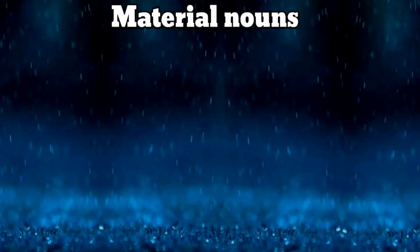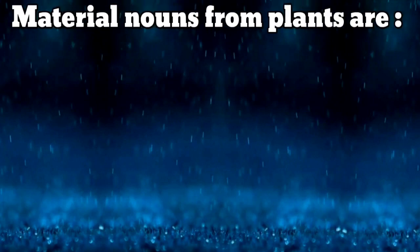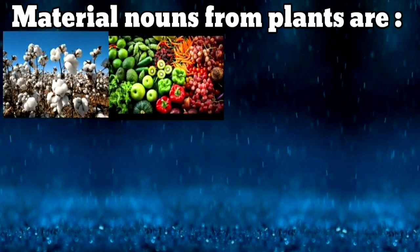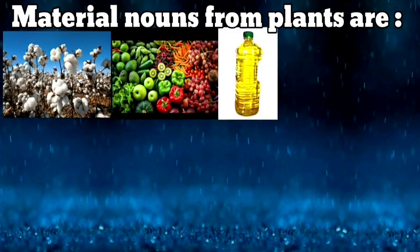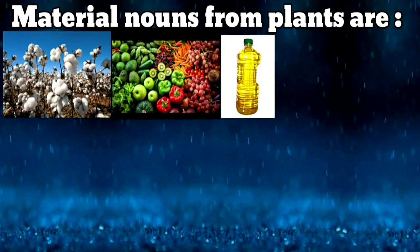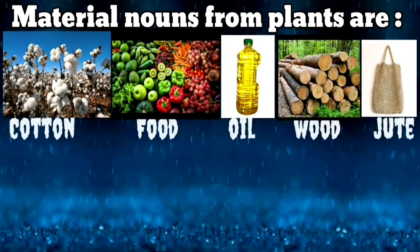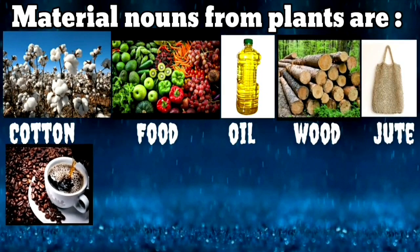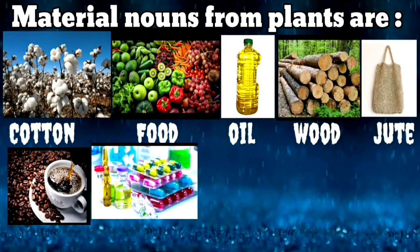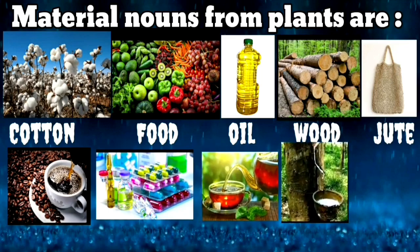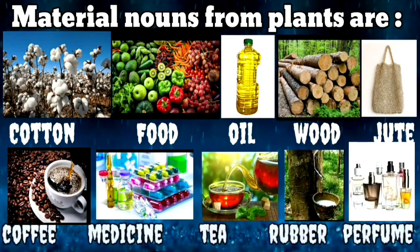Material nouns from plants are cotton, food, oil, wood, jute, coffee, medicine, tea, rubber, perfume, etc.